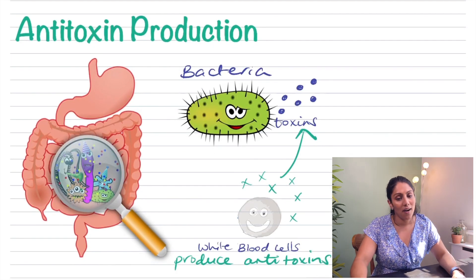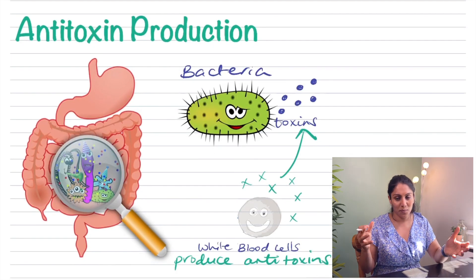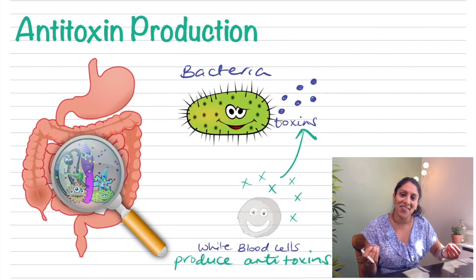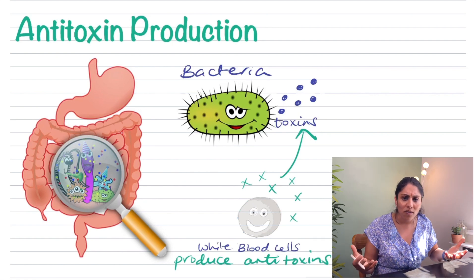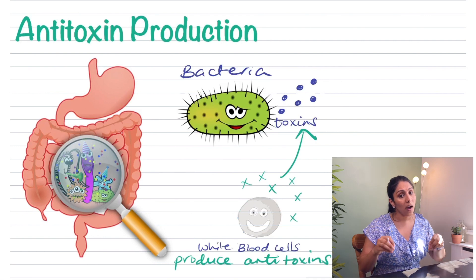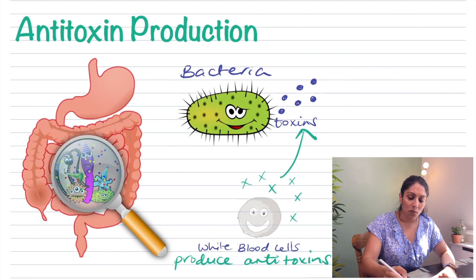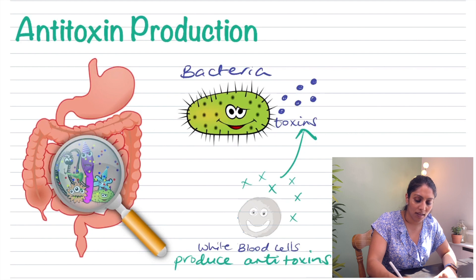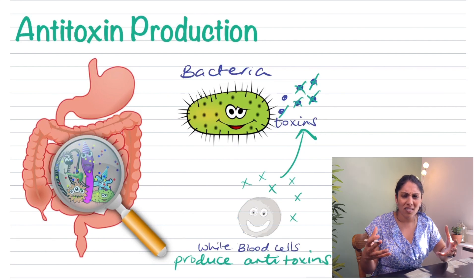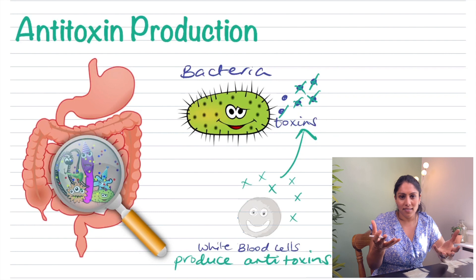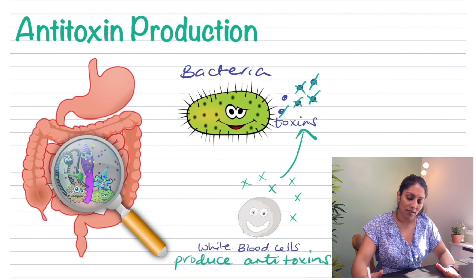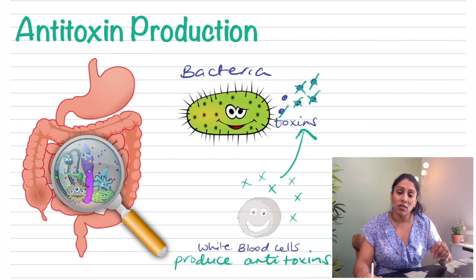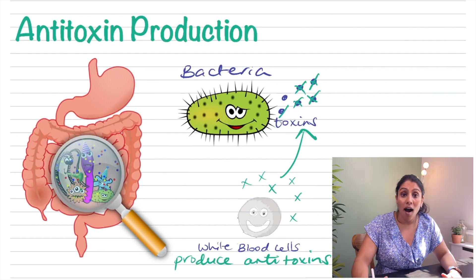Finally, let's look at anti-toxin production. When pathogens such as bacteria enter the body, they produce toxins. To counteract this, white blood cells produce anti-toxins to neutralize the toxins. The toxins create an imbalance and disrupt processes in our cells and body, so anti-toxins ensure the bacteria are no longer harmful to us.